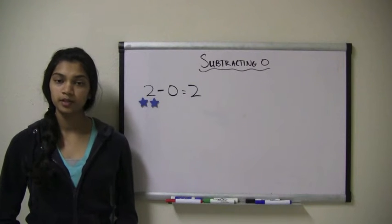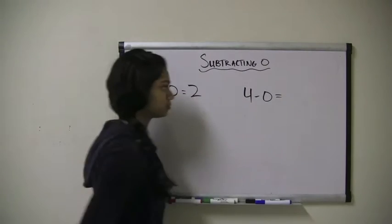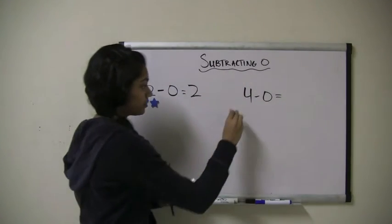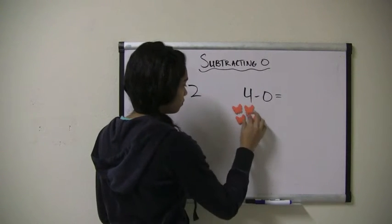Let's look at another problem. Let's say we had 4 minus 0. I have 4 butterflies to start out with: 1, 2, 3, 4.